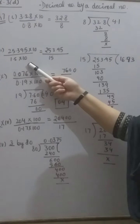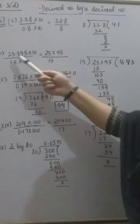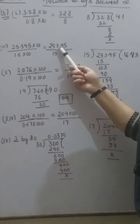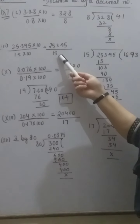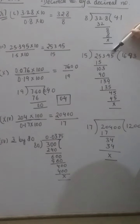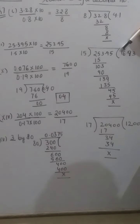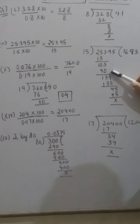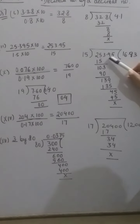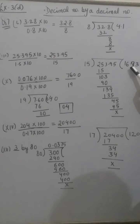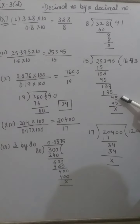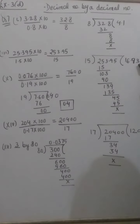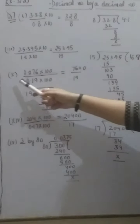3rd part: 25.395 divided by 1.5. Again we have one decimal place in the divisor, so we multiply numerator and denominator by 10. The numerator becomes 253.95 and the denominator becomes 50. Dividing 253.95 by 50: 50 goes into 253 — 5 times with remainder 3; bring down 9 to get 39; 50 goes into 395 with 9 times giving 135 remaining 45; bring down 5; 50 goes into 45... working through, our answer is 16.93.